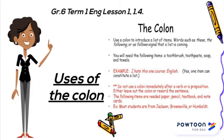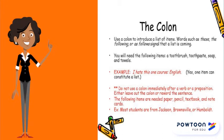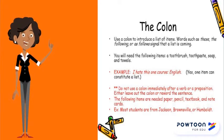Look below — the colon. Use a colon to introduce a list of items. Words such as 'these,' 'the following,' or 'as follows' signal that a list is coming. For example: 'You will need the following items: a toothbrush, toothpaste, soap, and towels.' Another example: 'I hate this one course: English.' Yes, one item can constitute a list.